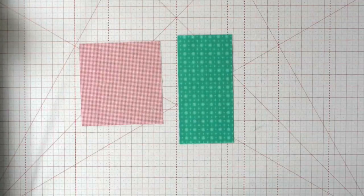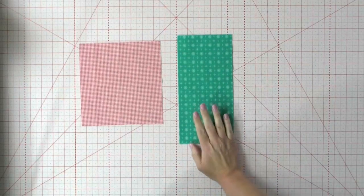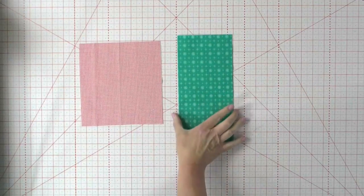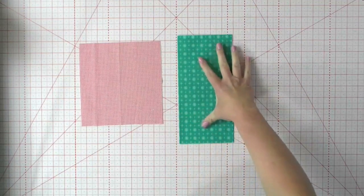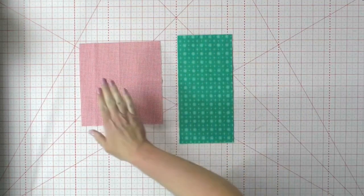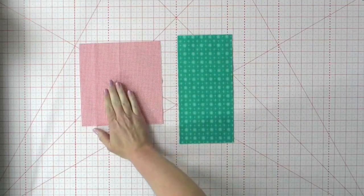To make the whirlwind block you're going to need four pieces that are four and a quarter inches wide by nine and three-eighths inches long, and then one seven and a quarter inch square.